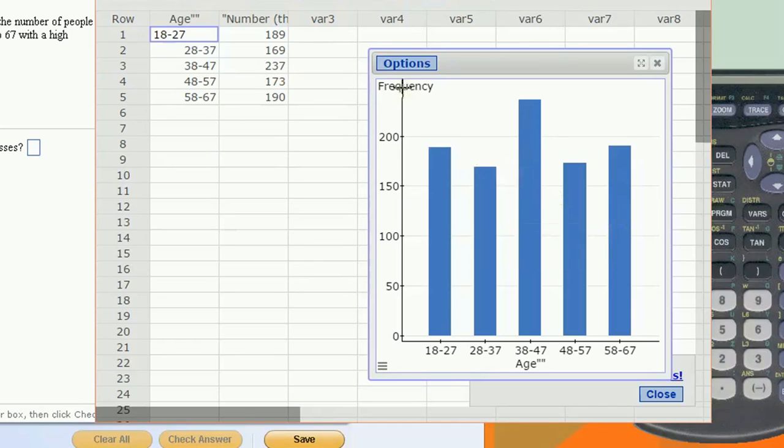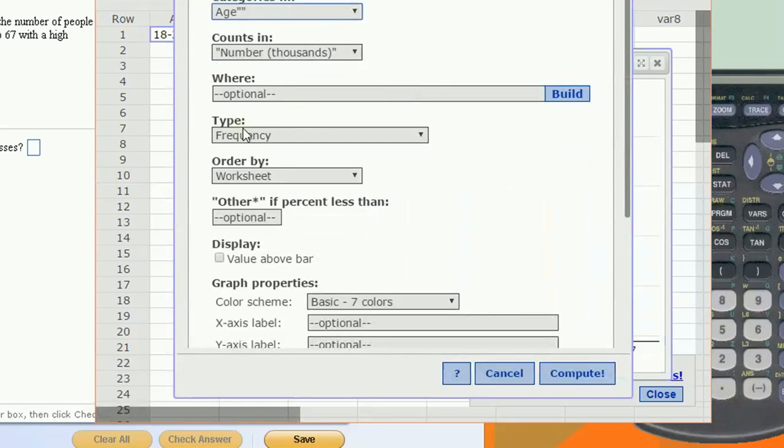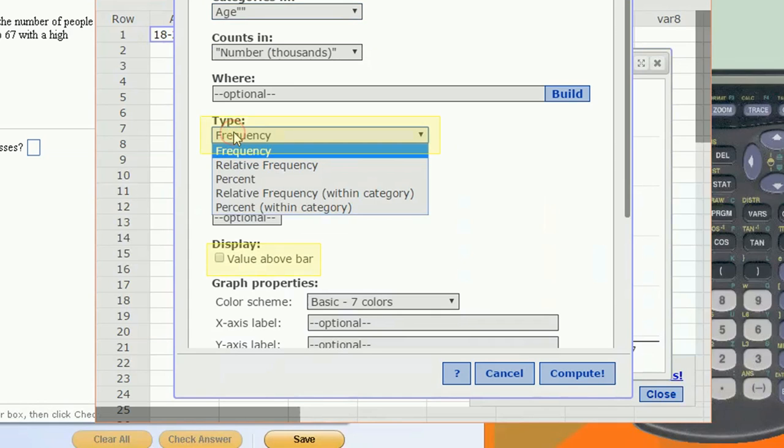Now suppose you want, rather than the frequency, the count, you wanted to have a relative frequency, which is what proportion of your respondents were in each of these categories. That's easy to do. You just change the type of chart from a frequency to a relative frequency.